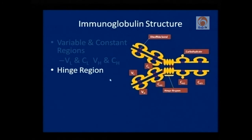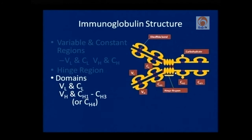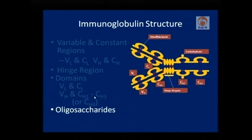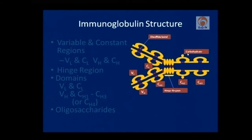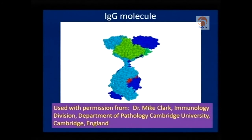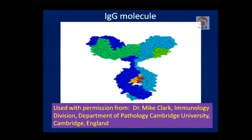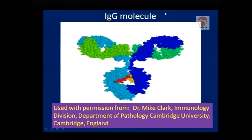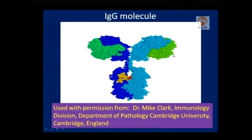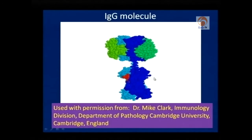The hinge region offers flexibility to the protein molecule during immune reactions. There are different domains: VL and CL domains in the light chain, and VH and CH domains in the heavy chain. Oligosaccharides are also present on antibodies, contributing to their efficiency. This is a model of the IgG molecule, which is the predominant immunoglobulin in our system, showing two heavy chains, two light chains, and the inter-chain disulphide bonds.